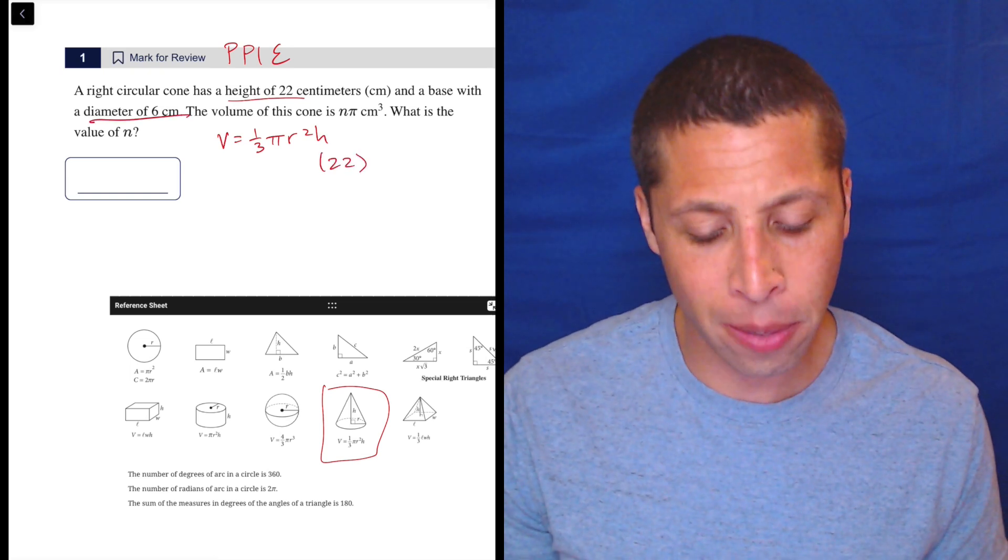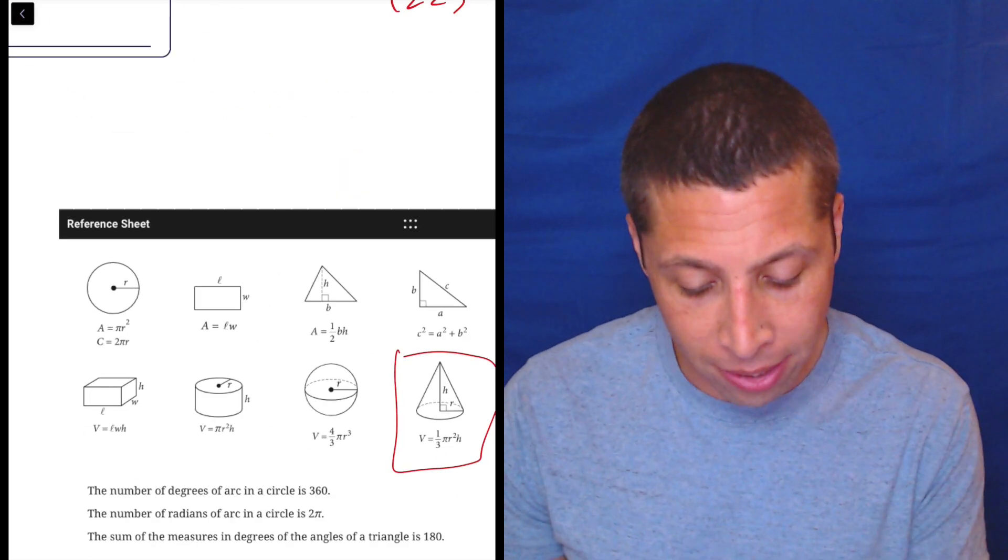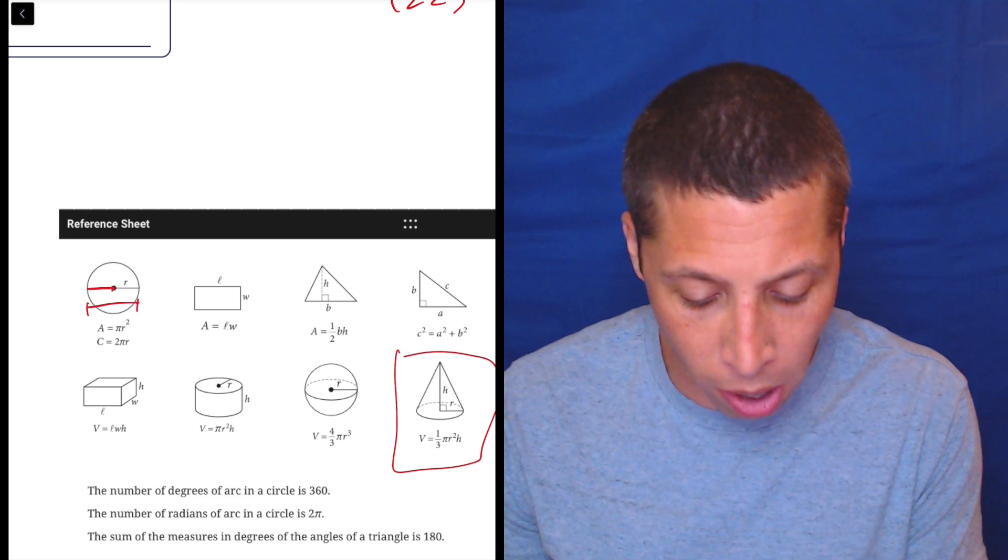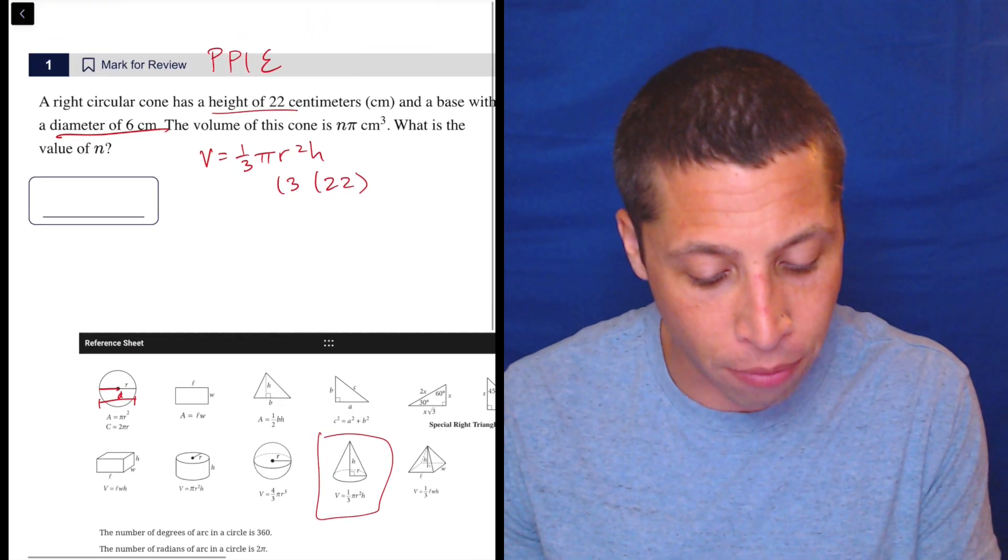they did not give us the radius. They give us the diameter, but that's okay because remember in a circle, the radius is half the diameter, right? The diameter is the full way across. The radius is half. So we just divide 6 by 2. So we get a radius of 3.